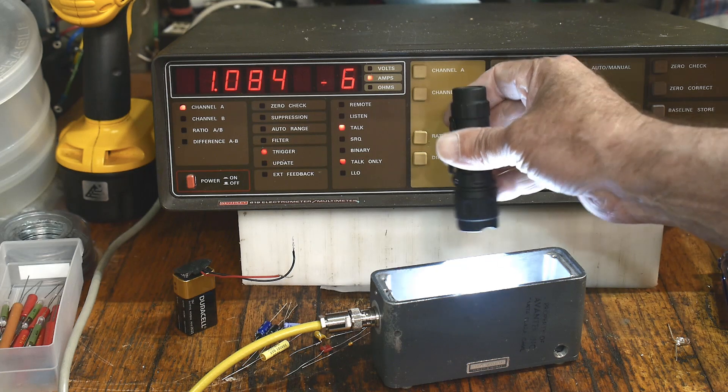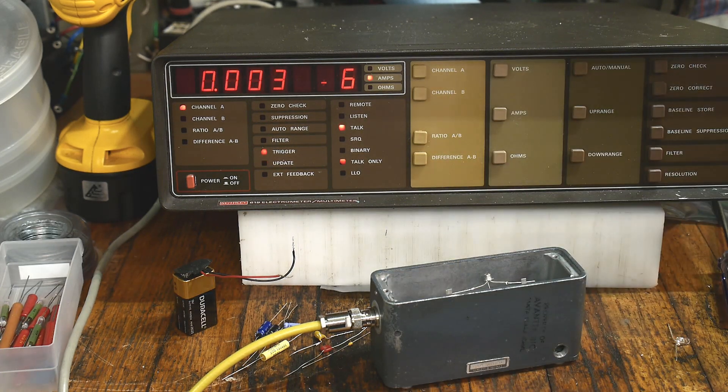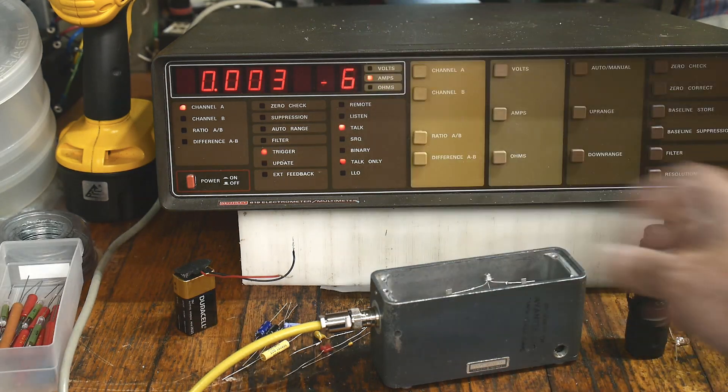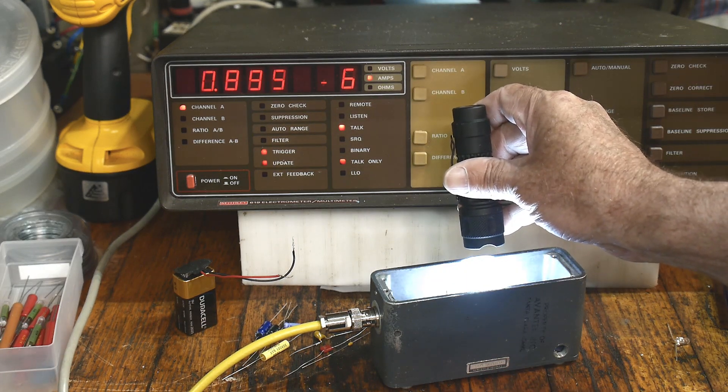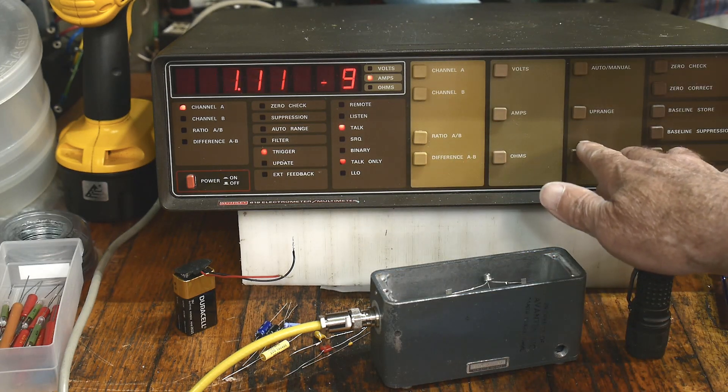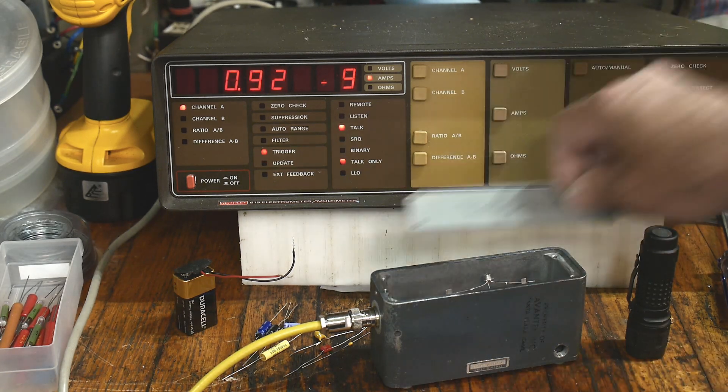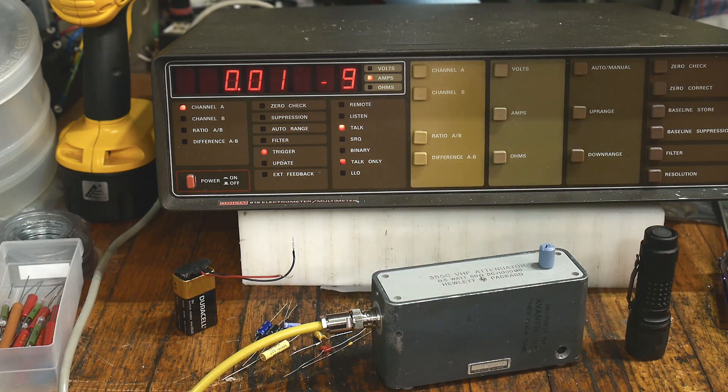But yeah, there you go. 2N222. And we're getting a lot of microamps out of it. Even with room light, we're getting one nanoamp. There you go, fact for the day.